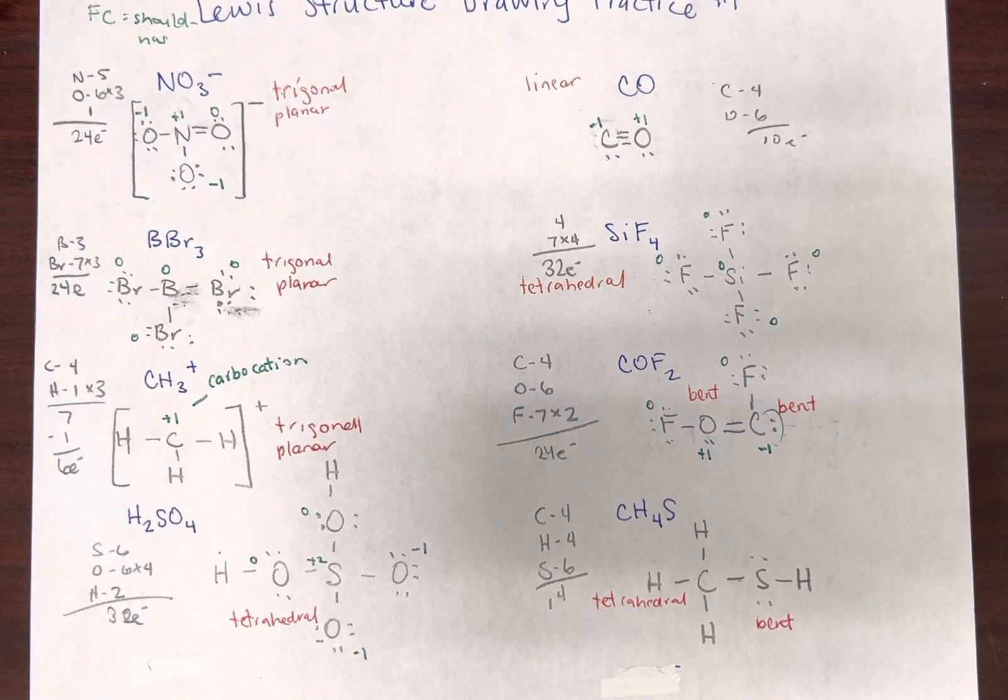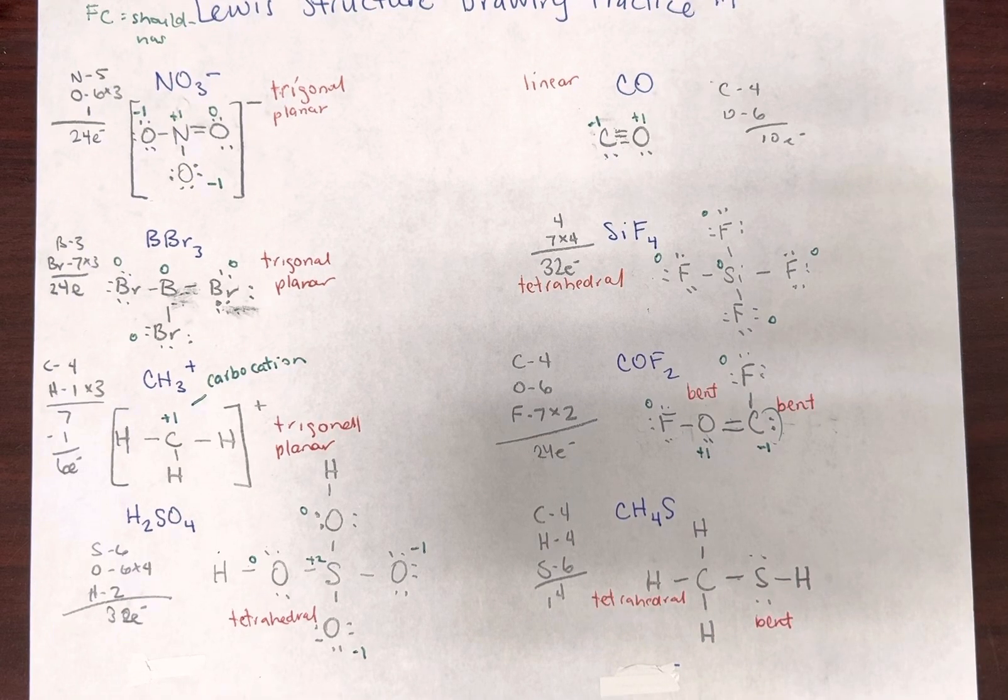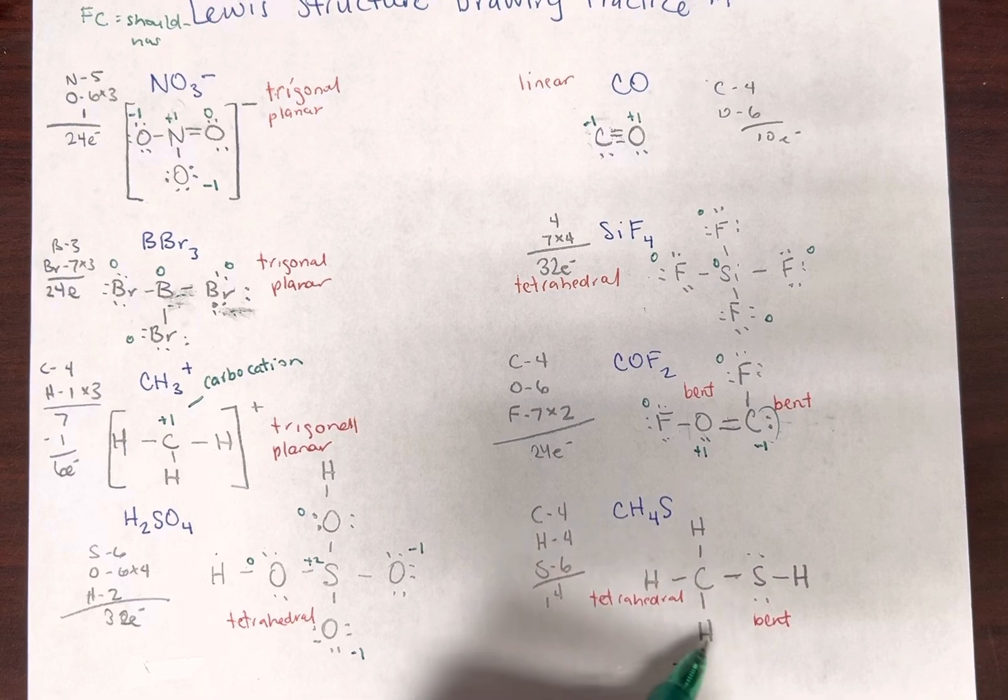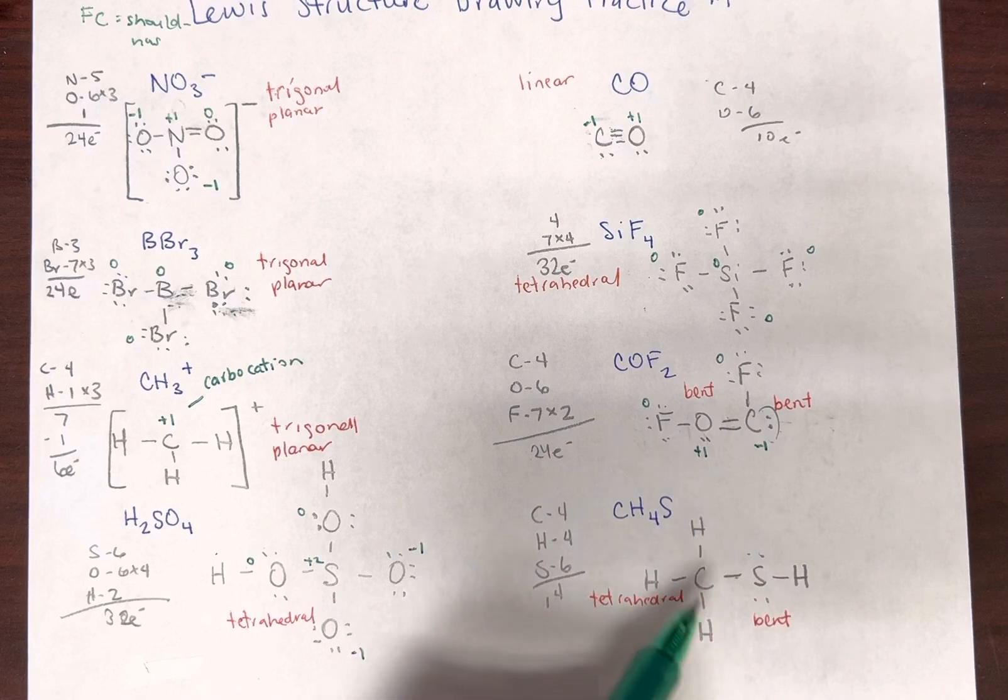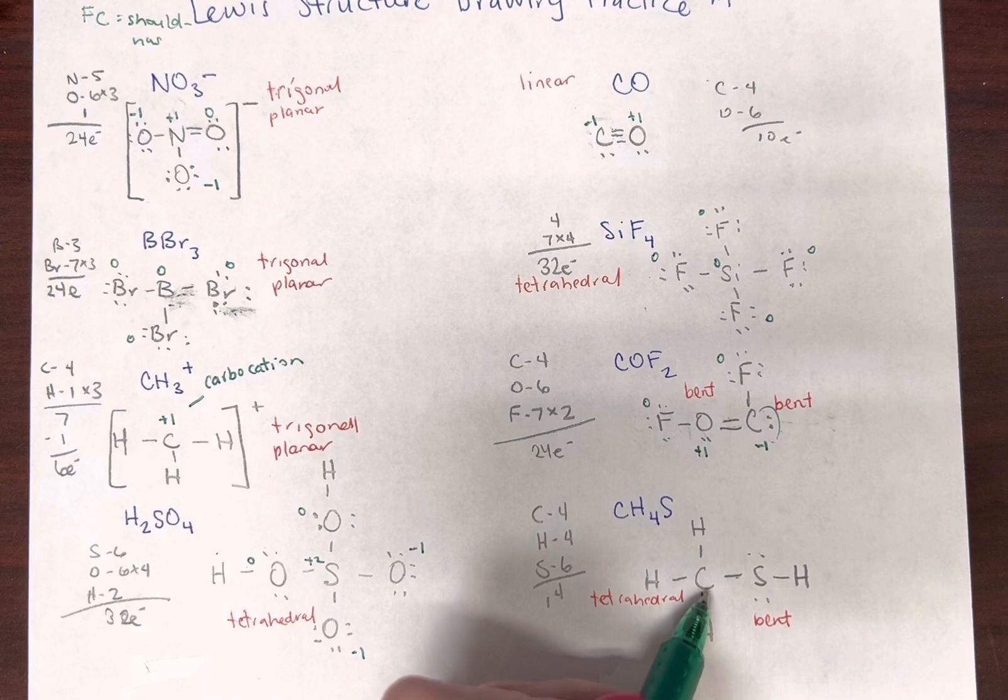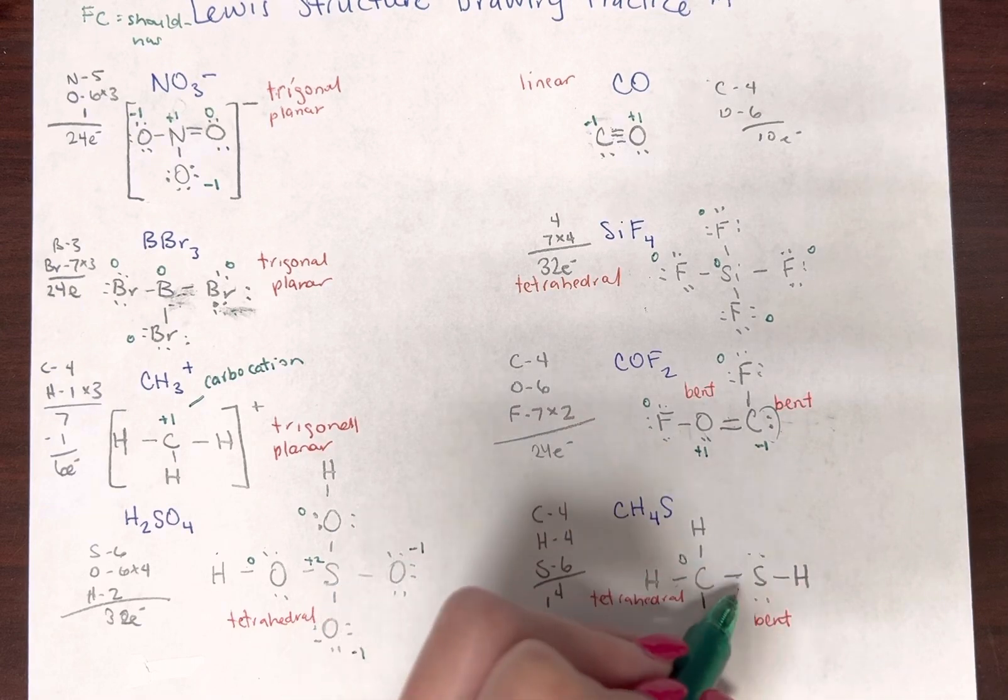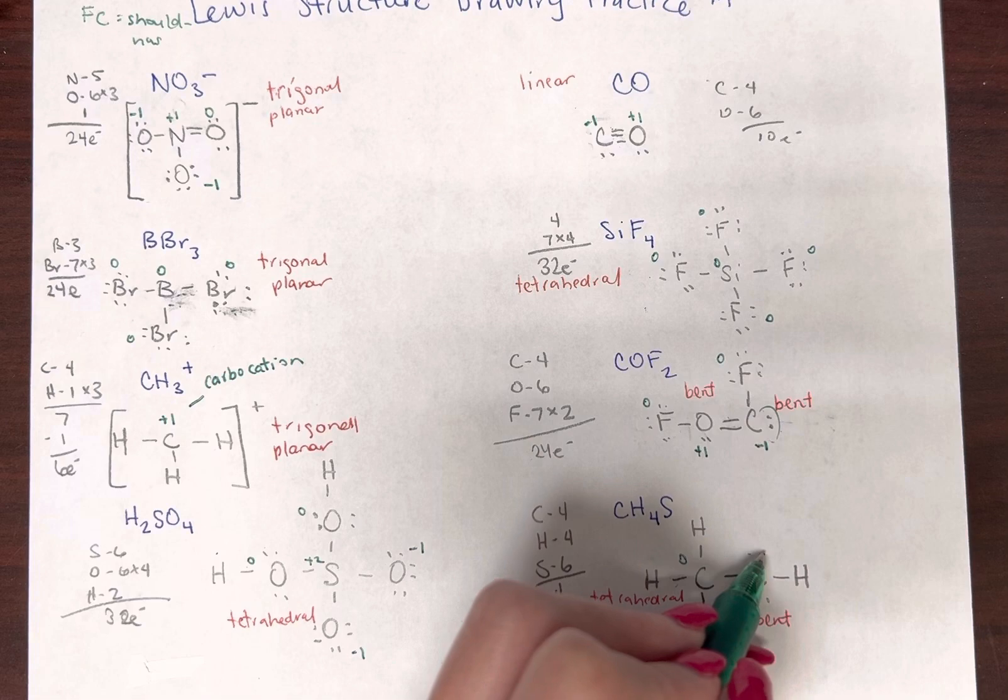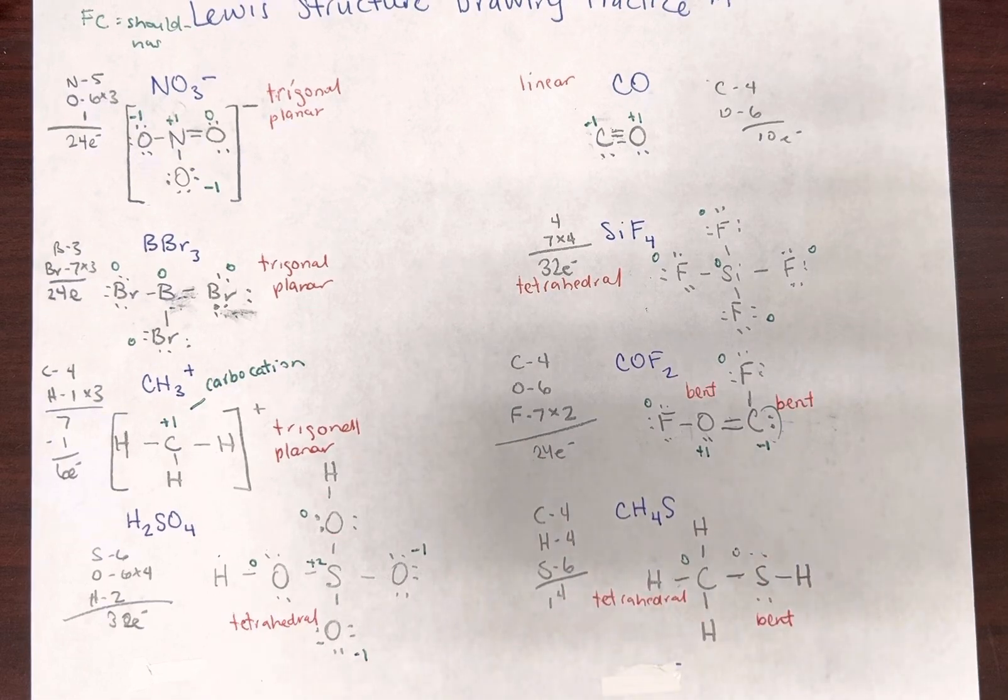So anybody cringing at the fact that sulfur is a plus two, you may have seen me do this before, but there's a way you can fix it. It's called expanded octets but we're not going to worry about that because this is an intro to organic. All right, let's look at this one. Hydrogen's fine as long as hydrogen has one bond it can't really do anything else. All right, carbon brings in four. One, two, three, four. Zero. Sulfur brings in six. One, two, three, four, five, six. Zero. Very good.